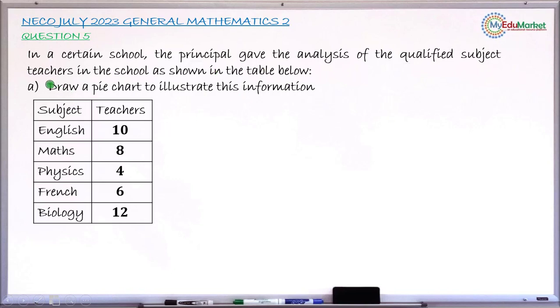So the question asked here is to draw a pie chart to illustrate this very information. This is the table, these are the subjects there, and these are the number of qualified teachers. So it is this information that we are going to represent in a pie chart form.